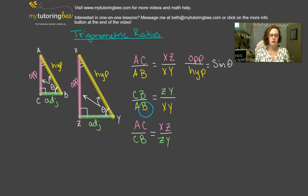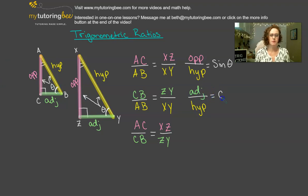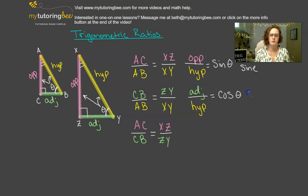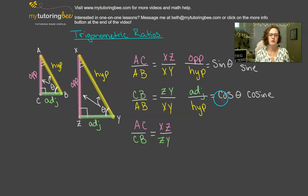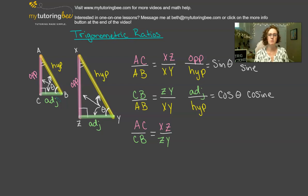When we're looking at adjacent over hypotenuse, we call that cosine of theta. SIN and COS are abbreviations — sine is spelled S-I-N-E and cosine is C-O-S-I-N-E. The cosine of angle theta is the adjacent over the hypotenuse. And that ratio is going to be the same in both of these triangles because the angle theta has the same measurement.